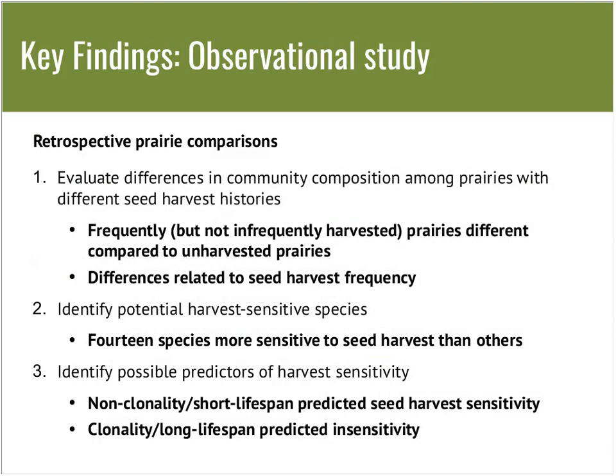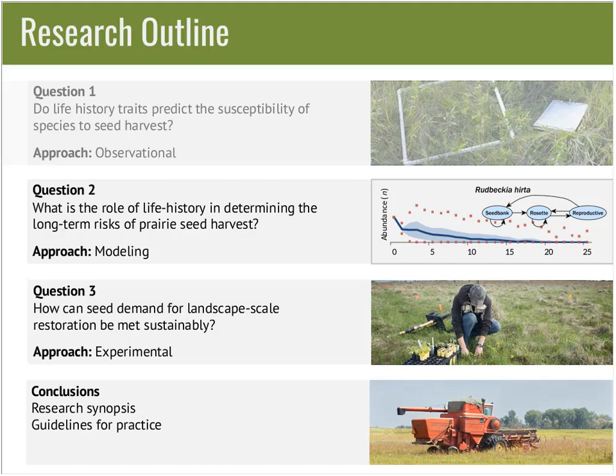To sum up: frequently, but not infrequently, harvested prairies are different compared to controls, and those differences are related to seed harvest frequency. Out of 60 species examined, 14 were sensitive to seed harvest, and short lifespan and non-clonality predicted sensitivity. On the flip side, 46 species — most of which were clonal and long-lived — were insensitive. So life history traits do seem to predict the susceptibility of species to seed harvest, where short-lived non-clonal species are sensitive to annual harvesting.